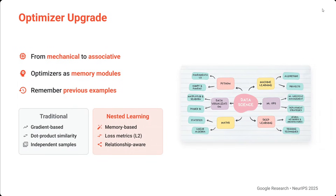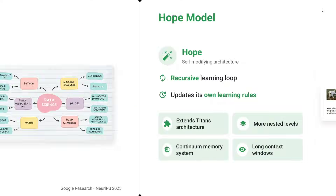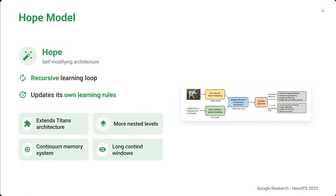On optimizing the optimizer: it upgrades from mechanical to associative — optimizers are used as memory modules and remember previous examples too. Using nested learning, the Google team has released a new model called HOPE. It features a self-modifying architecture with a recursive learning loop that updates its own learning rules. It extends the Titans architecture released a few months back, with more nested levels, a continuum memory system, and a long context window.